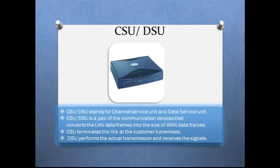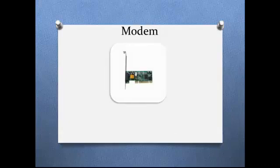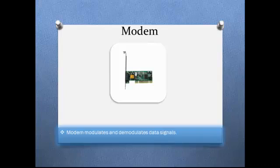DSU performs the actual transmission and receives the signals. A modem is a communication device used to provide connectivity with the internet. A modem works in two ways: modulation and demodulation. It converts digital data into analog and analog data into digital.